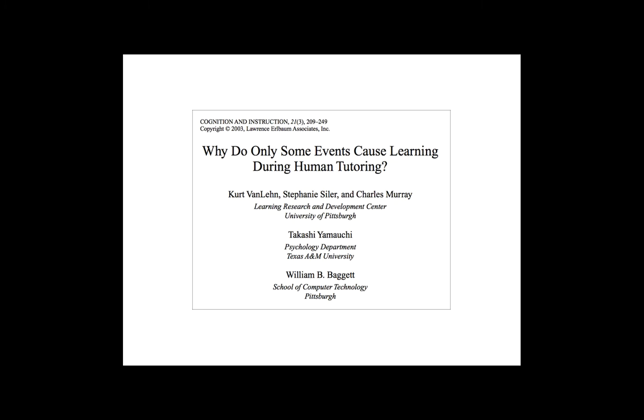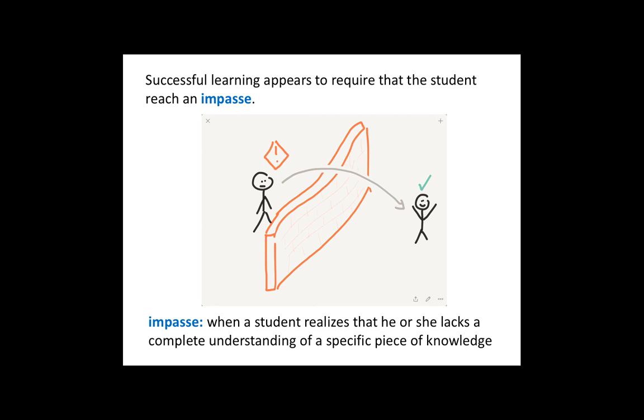Another follow-up study to this one, why do some events, only some events cause learning during human tutoring? The whole body of research from this group, and what they find is that, sorry, this is where I hand-draw research, but you can go read the papers, I promise it's in there, is that successful learning appears to happen when the student reaches an impasse.